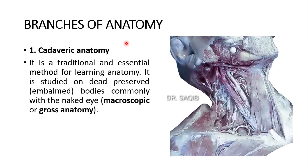Let's begin the definitions of branches of anatomy. First is cadaveric anatomy. Obviously, it is a traditional and essential method for learning anatomy. It is studied on dead, preserved or embalmed bodies, commonly with the naked eye. This is also called macroscopic or gross anatomy. Here you can see a section of the neck and part of the face of a cadaver.